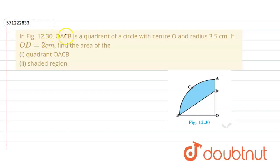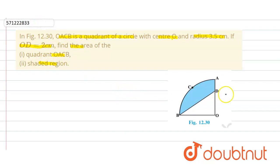In the given question, OACB is a quadrant of a circle with center O and the radius is 3.5 centimeters, and OD is equal to 2 centimeters. We have to find the area of quadrant OACB and the shaded region.